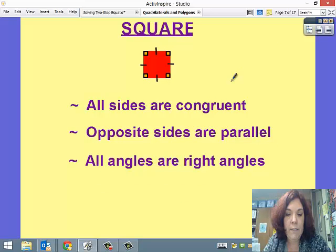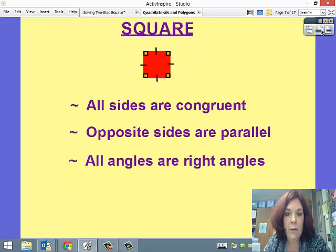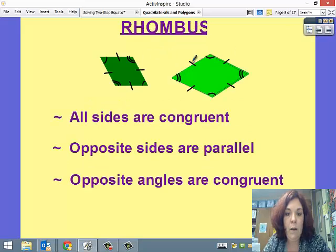A square: all sides are congruent, so they're the same. Opposite sides are parallel—they would not intersect if you continued these lines. All the angles are right angles, and a square is a type of parallelogram. And then a rhombus: all sides are congruent.